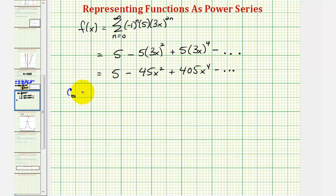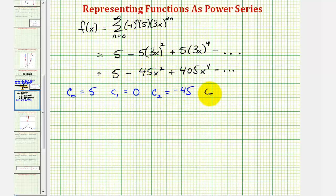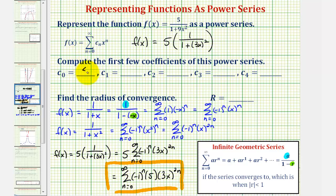So c₀ = 5. c₁ is the coefficient of the degree one term — there is no degree one term, so c₁ = 0. c₂ = −45. c₃ is the coefficient of the degree three term — there is no degree three term, so c₃ = 0. And c₄ = 405.